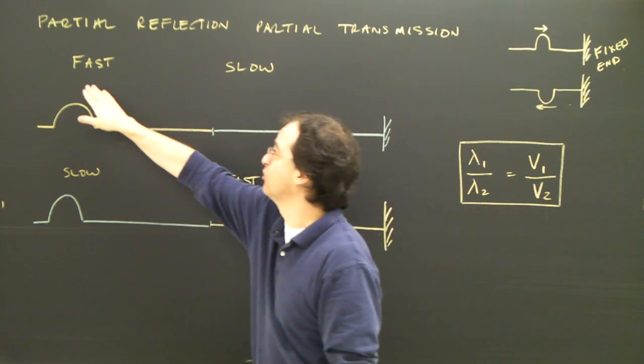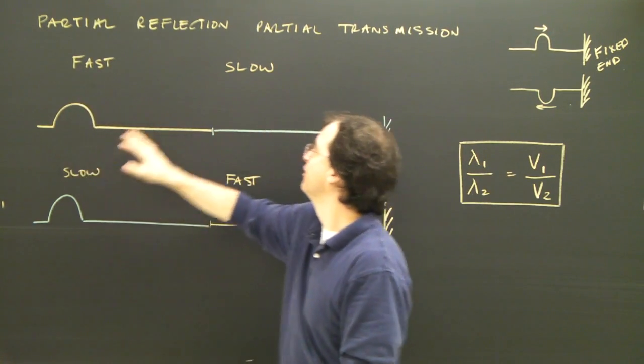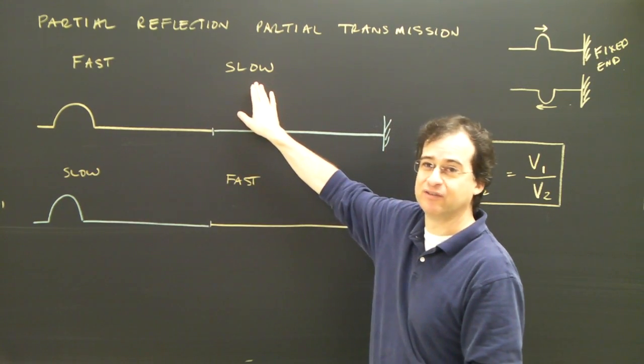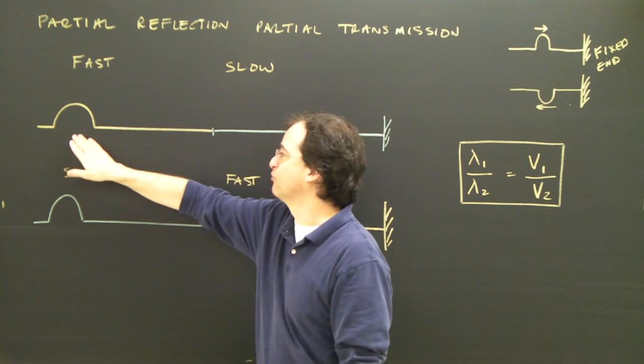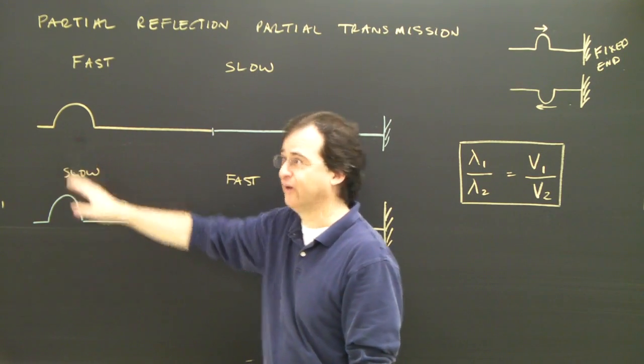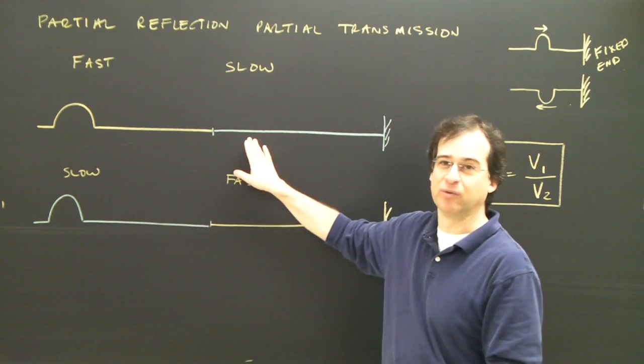In this case, I'm going from a material where the wave is traveling very quickly into a material where the wave is traveling slower. So if we were looking at a light wave, this would be a light wave going from a material where it's traveling fast, like air, into a material like water, where it's traveling slower.